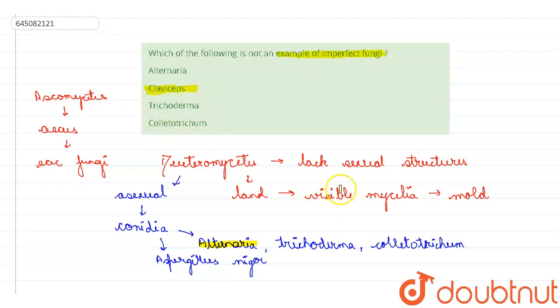Now if you talk about the other one, Trichoderma and Colletotrichum, I told you that they are also examples of this Deuteromycetes which are the imperfect fungi. So these also are not the correct options. So the only correct option will be second, which is the Claviceps. I hope this is clear to you. Thank you very much.